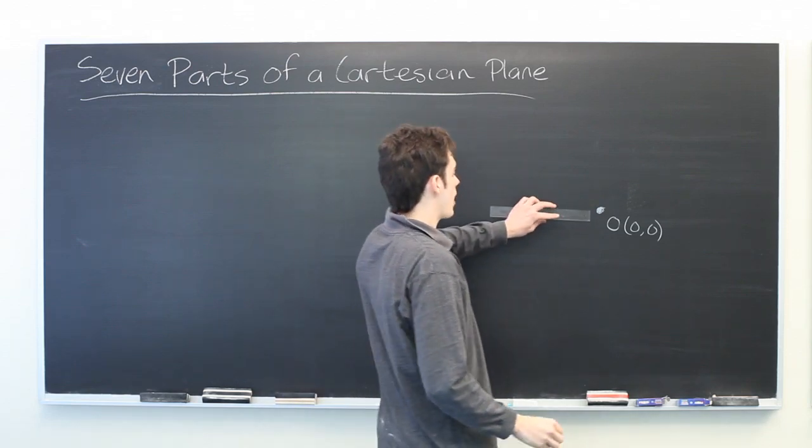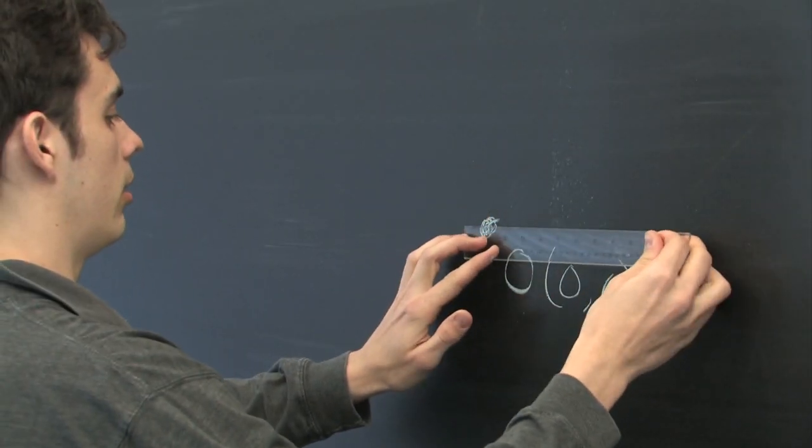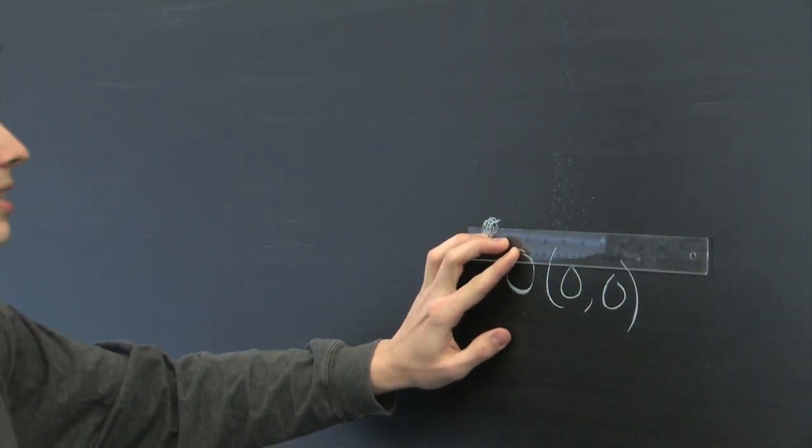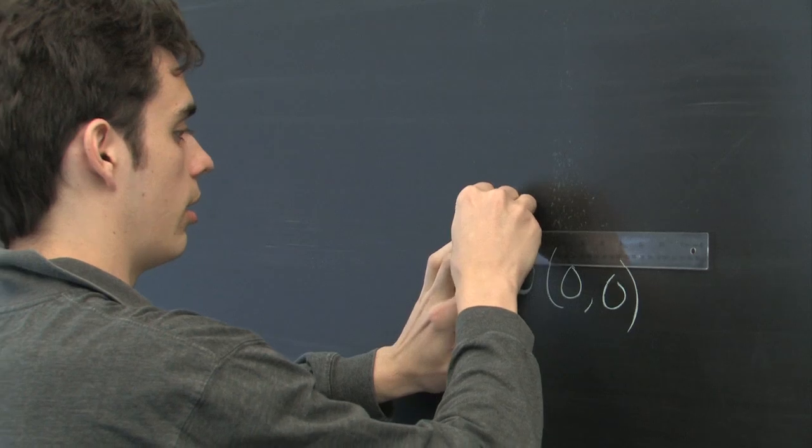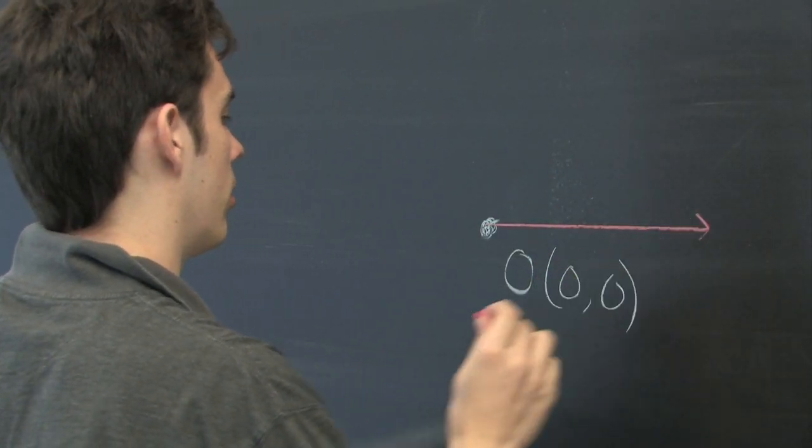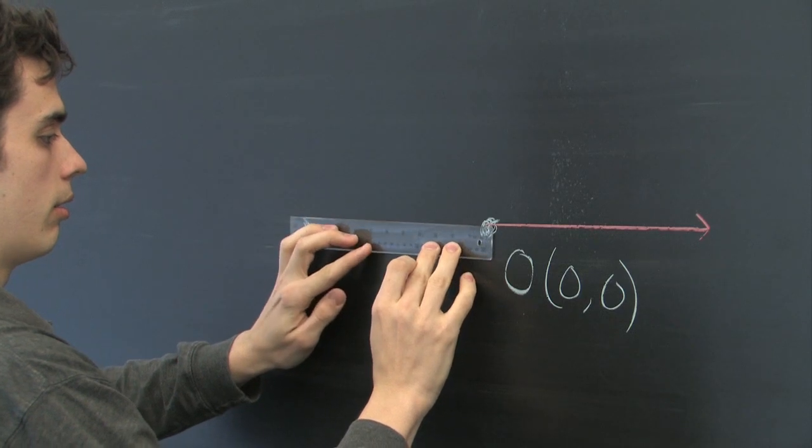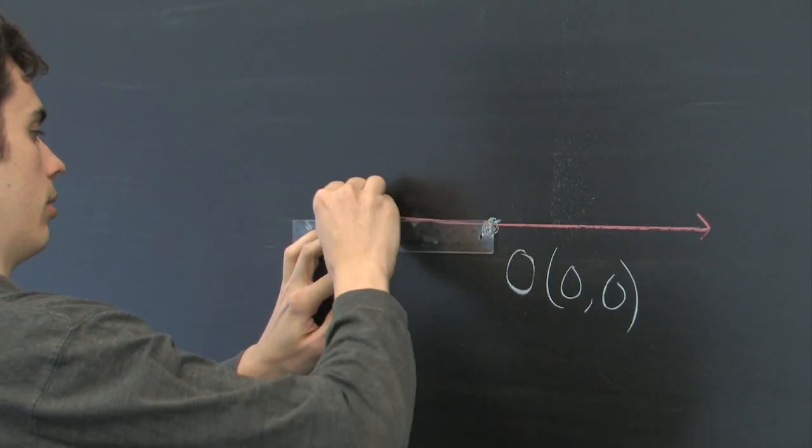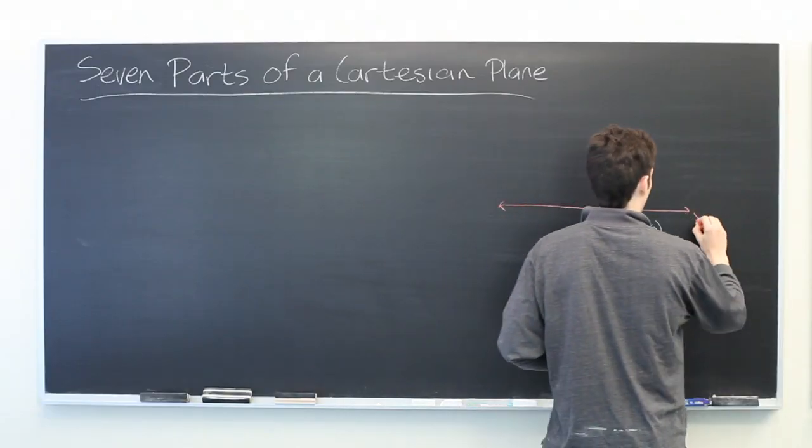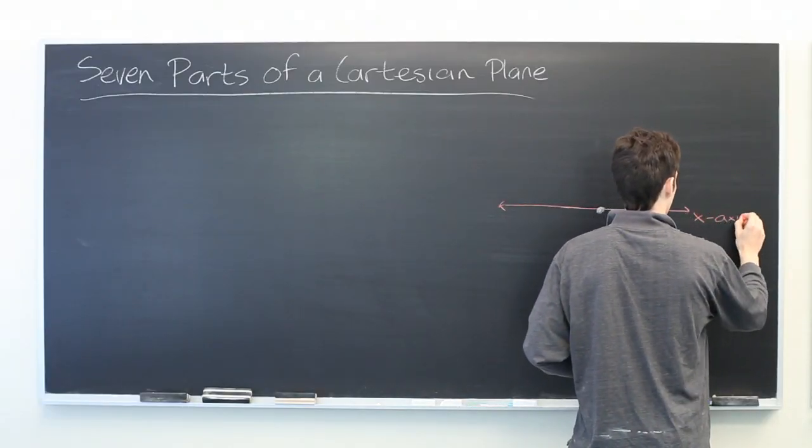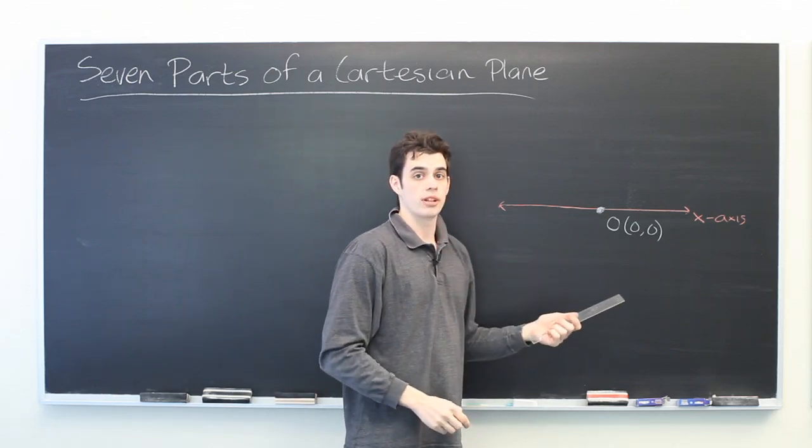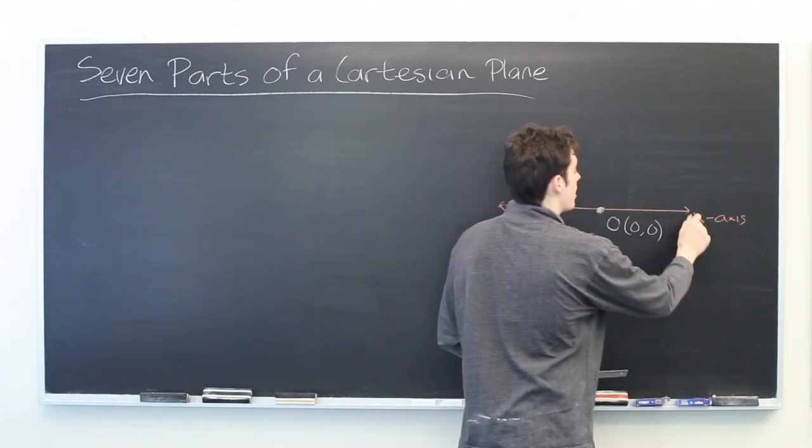Then we also have two axes. The axis that traditionally runs from left to right is the x-axis. This typically represents our independent variable.